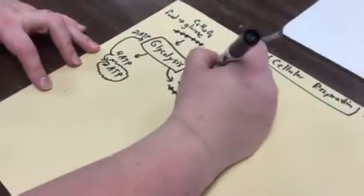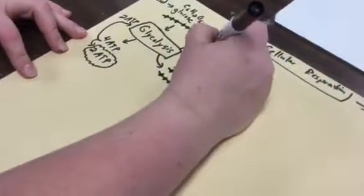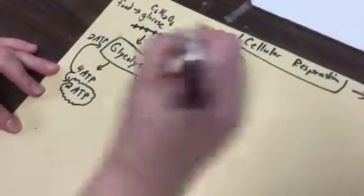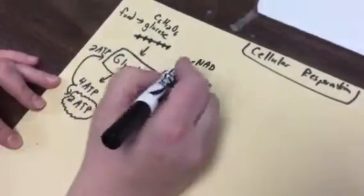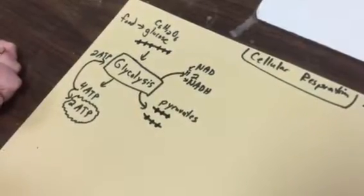The other thing we make when we do glycolysis is a chemical called NADH. So we're gonna take a chemical called NAD which is floating around and it's gonna pick up the hydrogen from the glucose and make NADH. And we're gonna actually make two of these with this process. And we're gonna use those later.